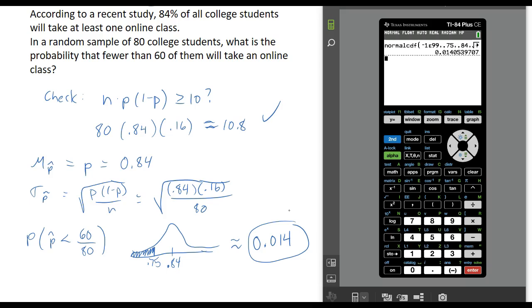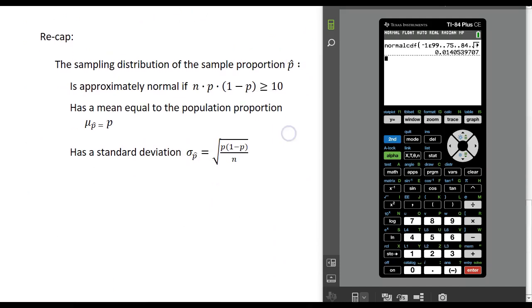Hopefully those two examples were helpful. Just a quick recap: when we work with the sampling distribution of a sample proportion, it's approximately normal as long as we meet this condition. We have a sample size times population proportion times 1 minus population proportion, and we want that to be at least 10. If it's not, we would probably just go back and get a bigger sample. The mean of this distribution is equal to the population proportion, and the standard deviation is given by the formula square root of p times 1 minus p divided by n. Thanks for watching.